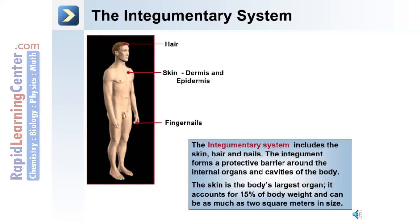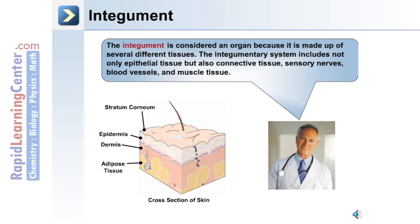The skin accounts for 15% of body weight and can be as much as 2 square meters in size. The integument is considered an organ because it's made up of several different tissue types, including not only epithelial tissue but also connective tissue, sensory nerves, blood vessels, and muscle tissue.